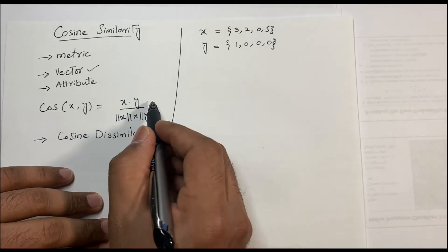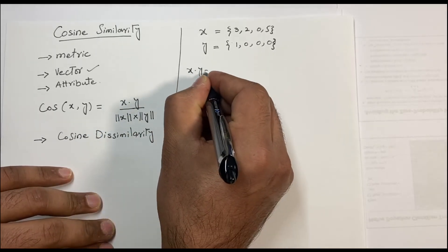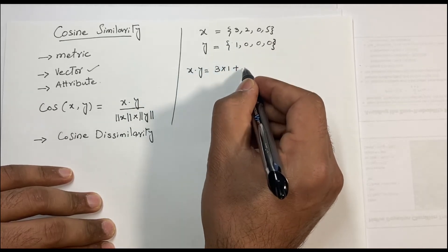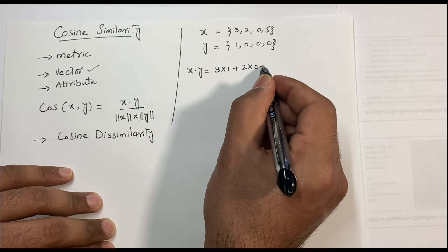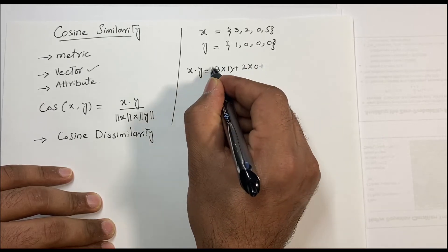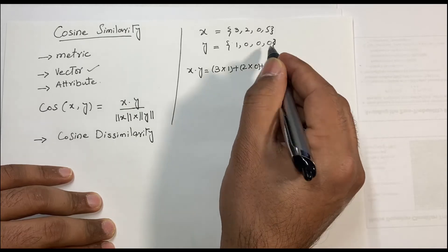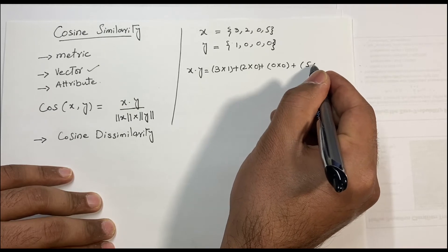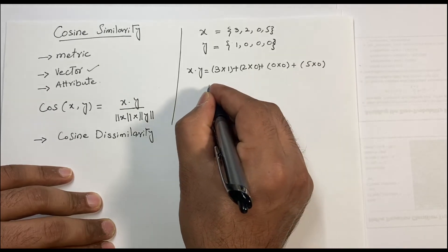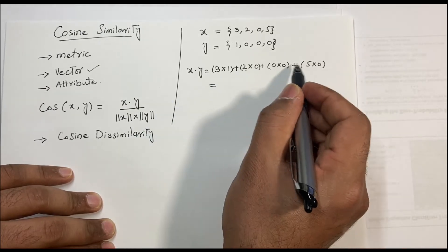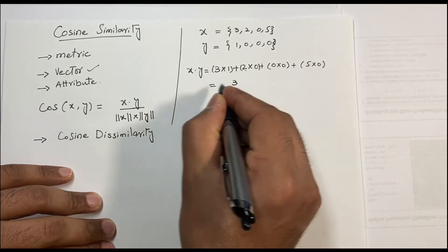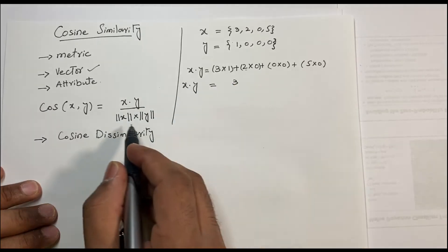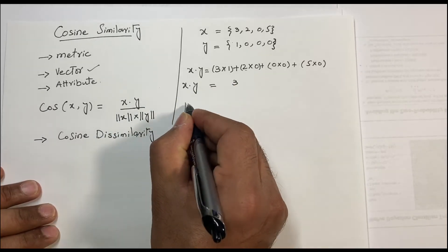We have to find x·y: that means 3×1 + 2×0 + 0×0 + 5×0. The zeros cancel out, so x·y = 3.